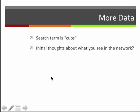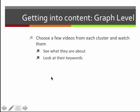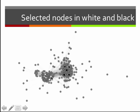You may have a theory about what's appearing, but let's probe more deeply into the content at the graph level. We have videos, not just tags, so we can't just show them all. What we'll do is choose a few videos from each cluster, watch them, read the description, and look at their keywords — sampling the data to get an idea of what's going on. I've chosen five white nodes from one cluster and five black nodes from the other, randomly selected.